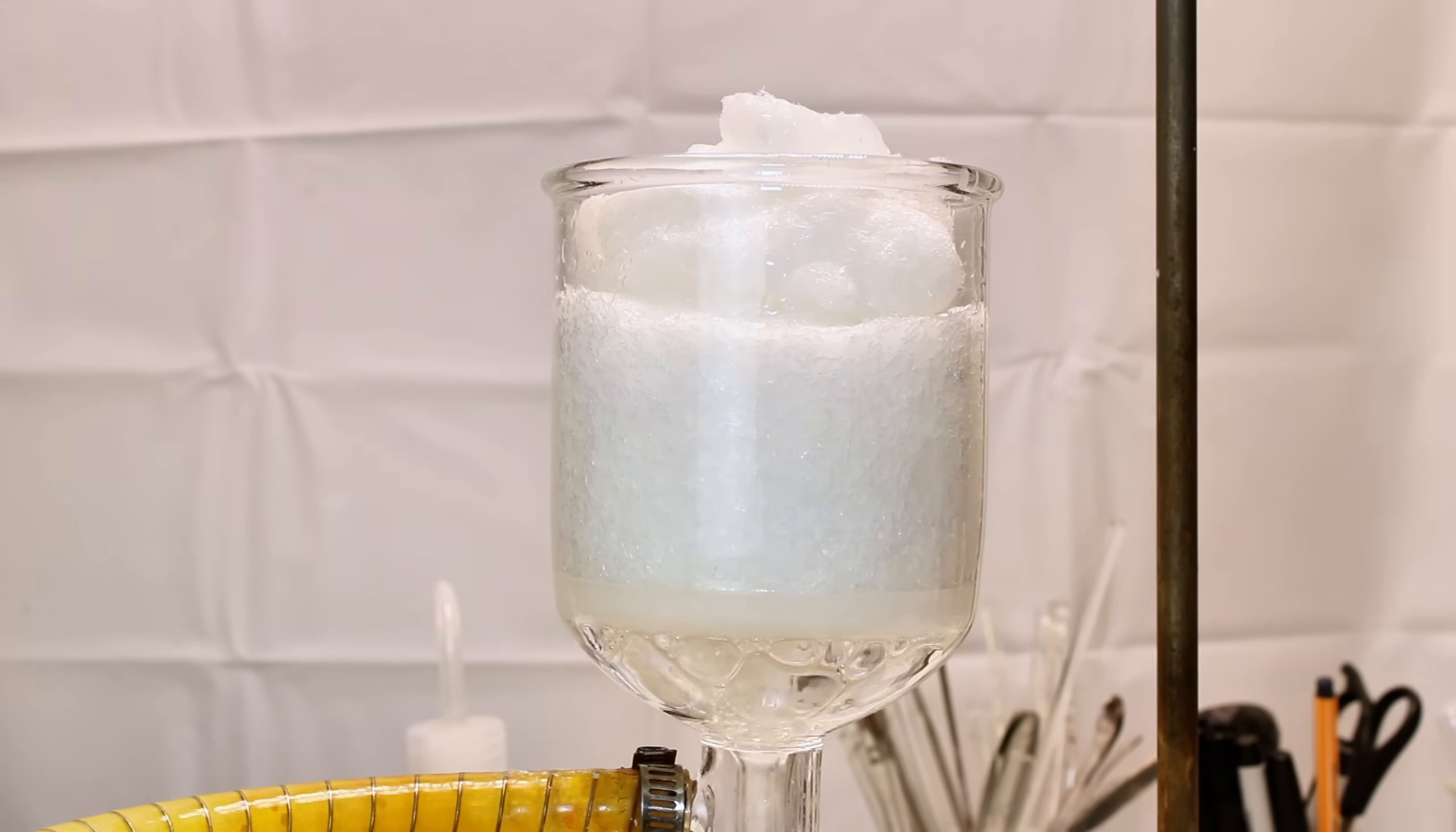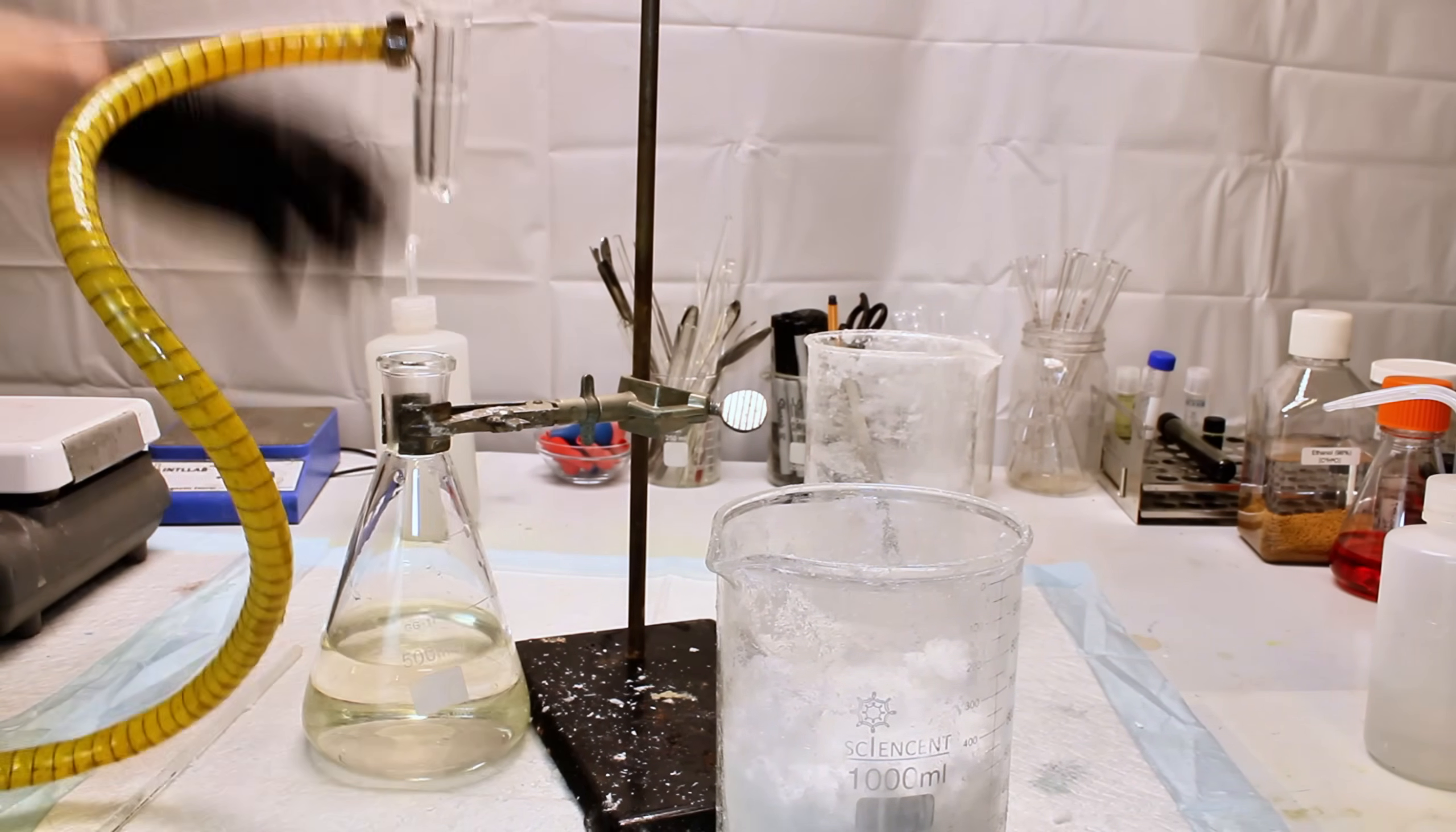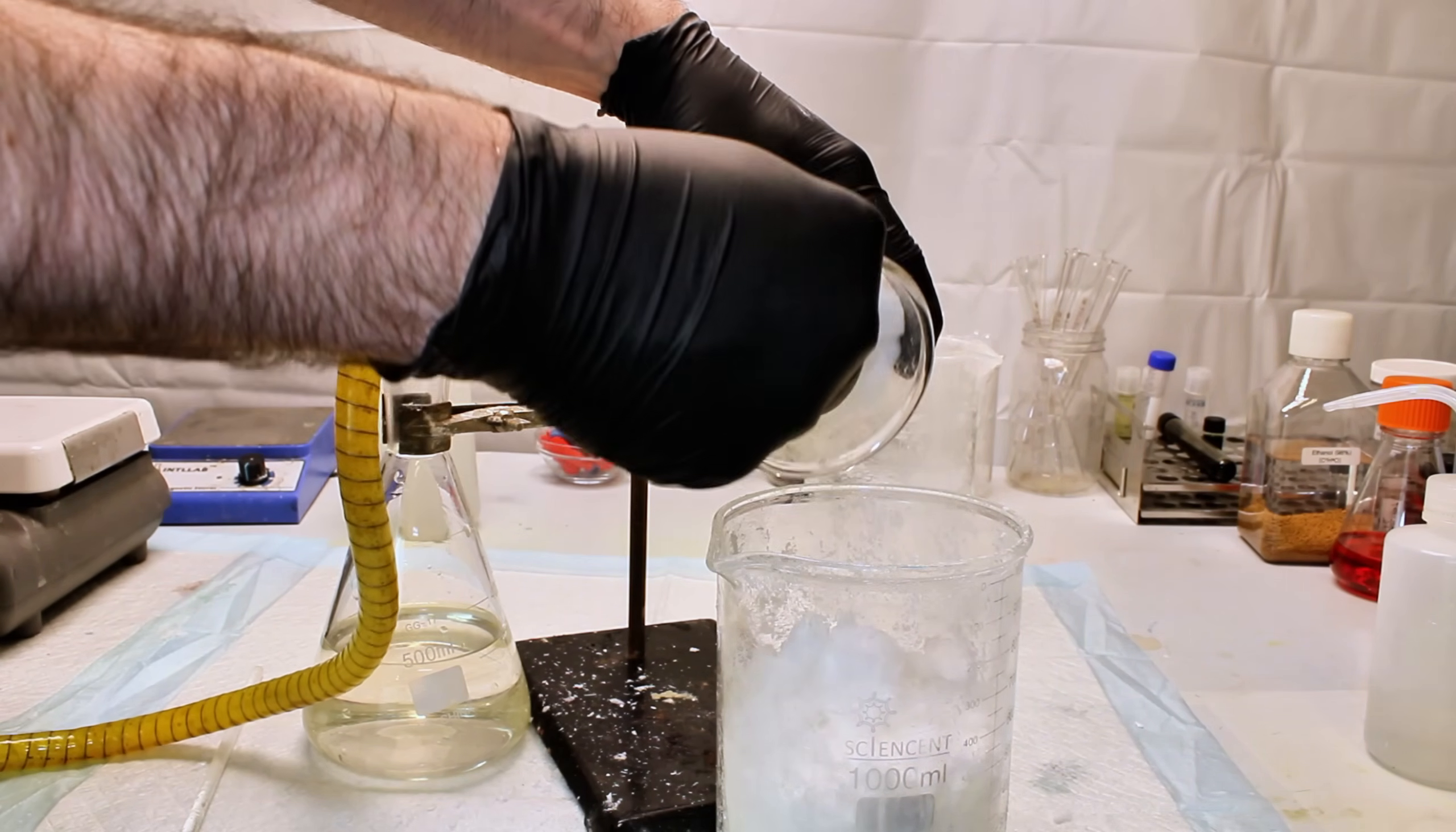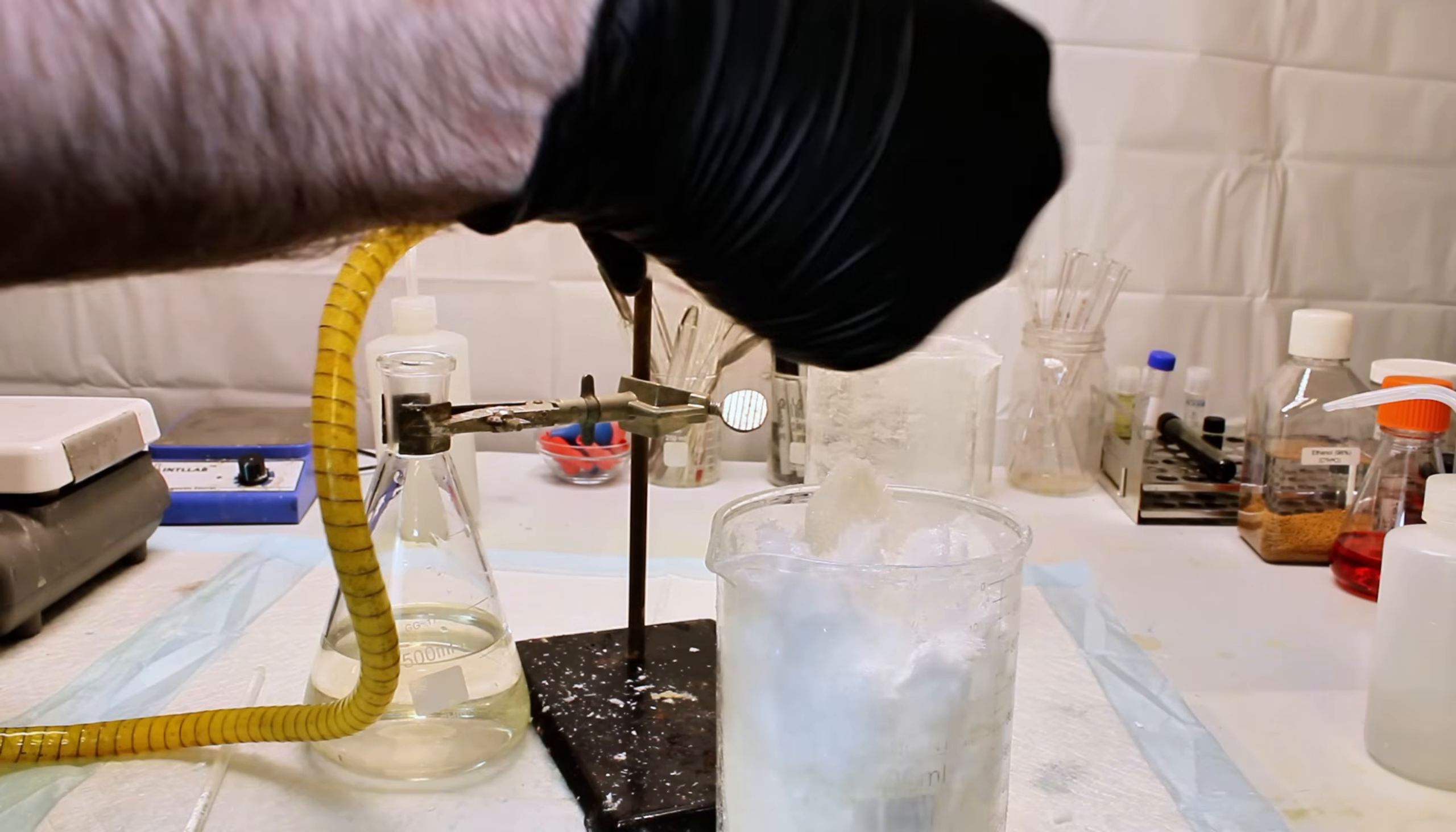After the urea crystals have been collected, they now need to be dried. The issue with this is that excessively high temperature will cause urea to decompose, which in addition to destroying your product will produce a lot of toxic ammonia gas. Not only is this a problem, but urea tends to be able to re-dissolve itself in its own residual moisture if you try to heat it, and this will result in a solid, unworkable mass.